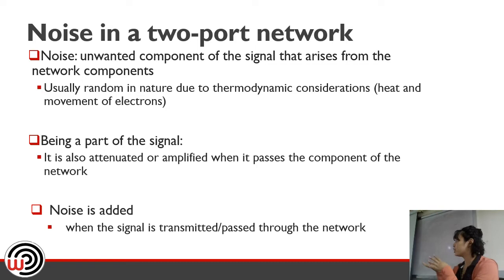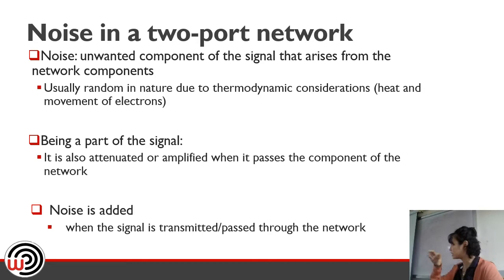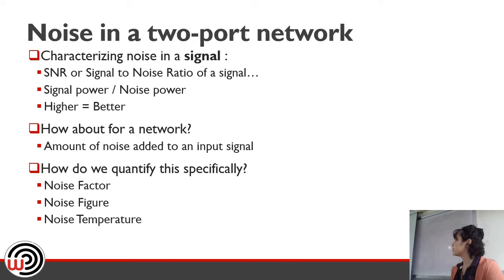Since noise is part of the signal, your signal is a mixture of your wanted signal and noise. What happens to your signal also happens to the noise — if you attenuate the signal, you attenuate the noise; if you amplify the signal, you also amplify the noise. Additionally, noise is added by components when a signal passes through the network.